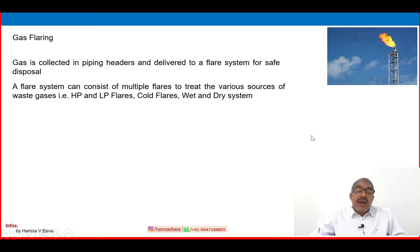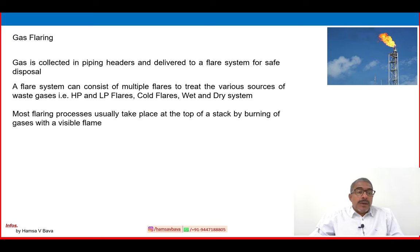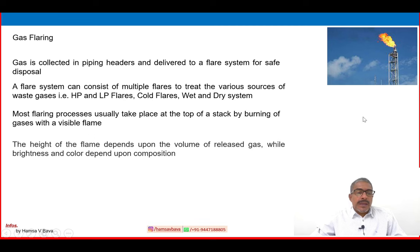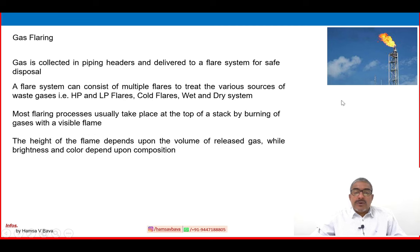At minimum, we need to understand HP and LP flares as the general classification of a flare system. Most flaring processes take place at the top of a stack by burning gases with a visible flame. Sometimes it will increase, sometimes decrease according to the release of excess gas, but a visible flame will always be present. The height of the flame depends on the volume of released gas, while brightness and color depend upon the composition.